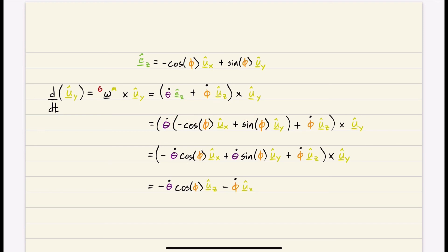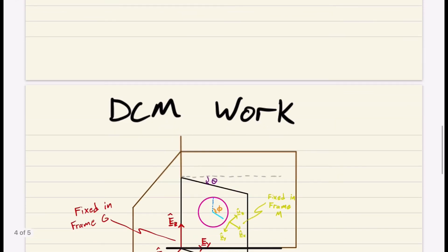So I'm going to distribute our theta dot. Let's distribute the theta dot, which is what we get here after we do the distribution. And now we can do the cross product. So UX crossed with UY, well that's UZ. So we end up with negative theta dot cosine phi UZ. UY crossed with UY is zero. UZ crossed with UY is negative UX. So we end up with negative phi dot UX. And that's it.